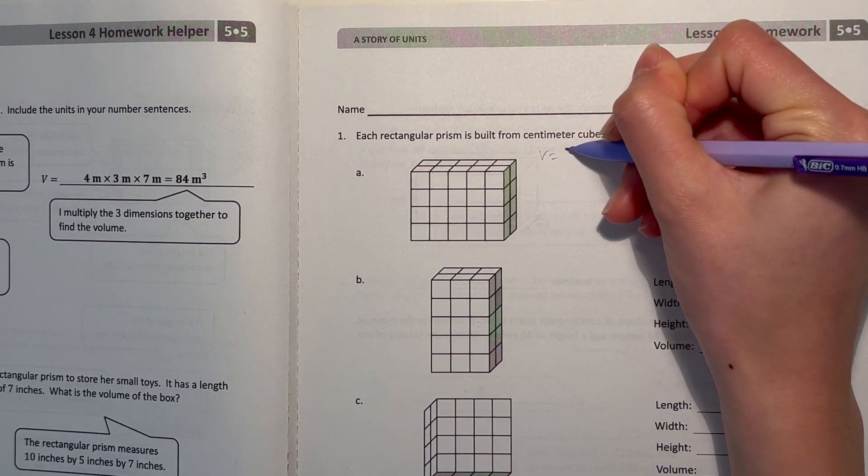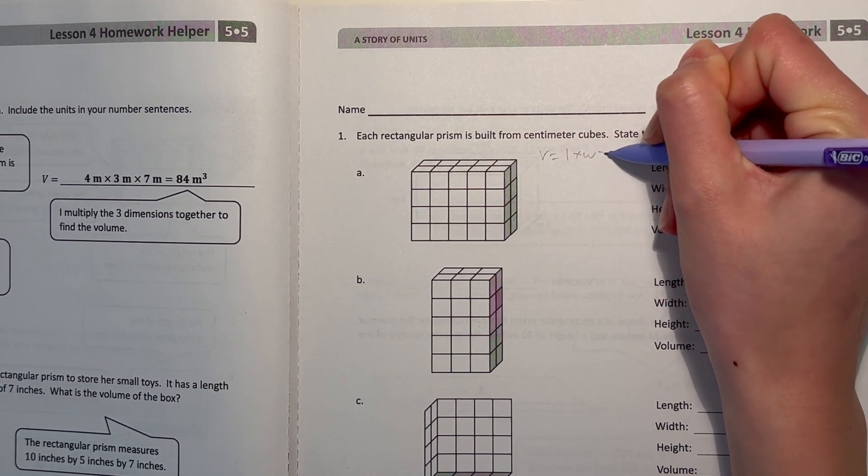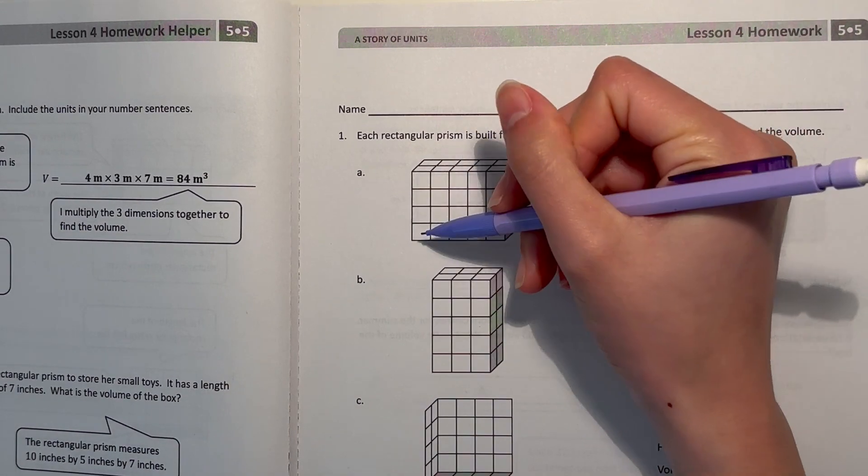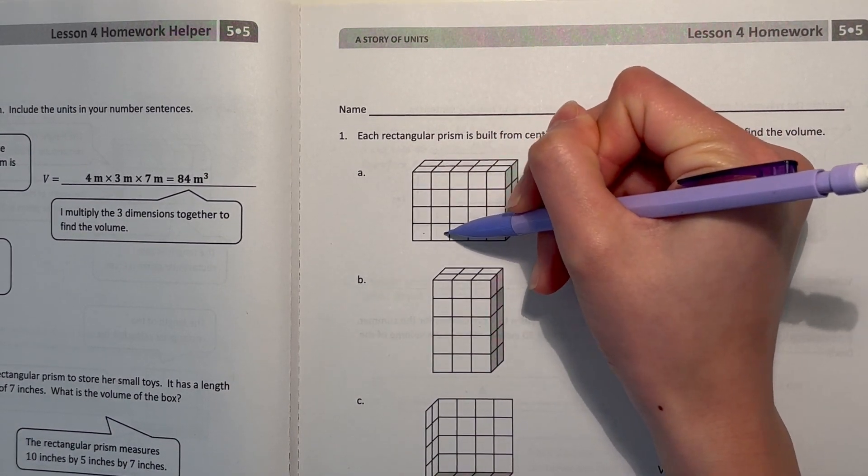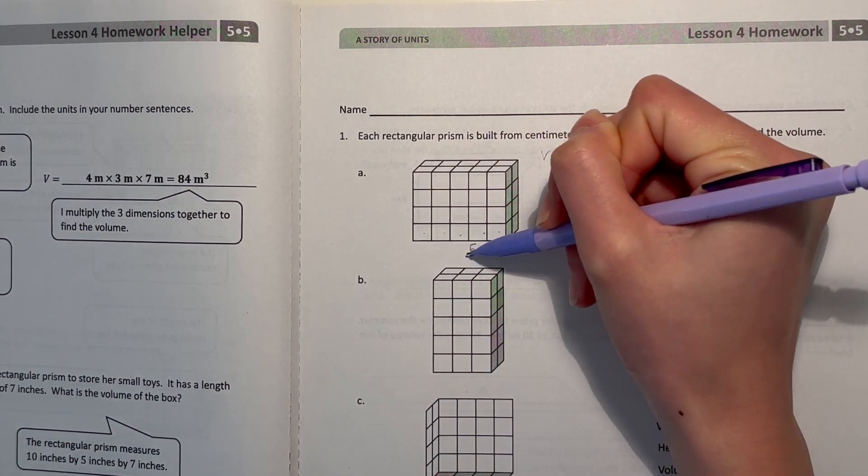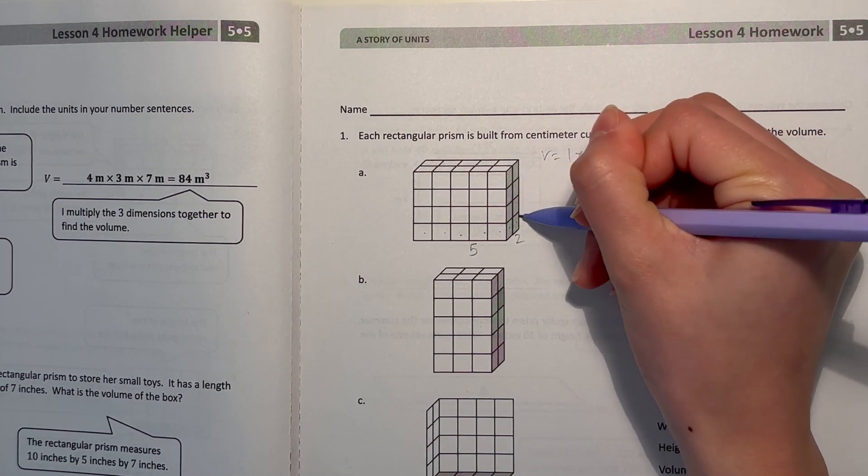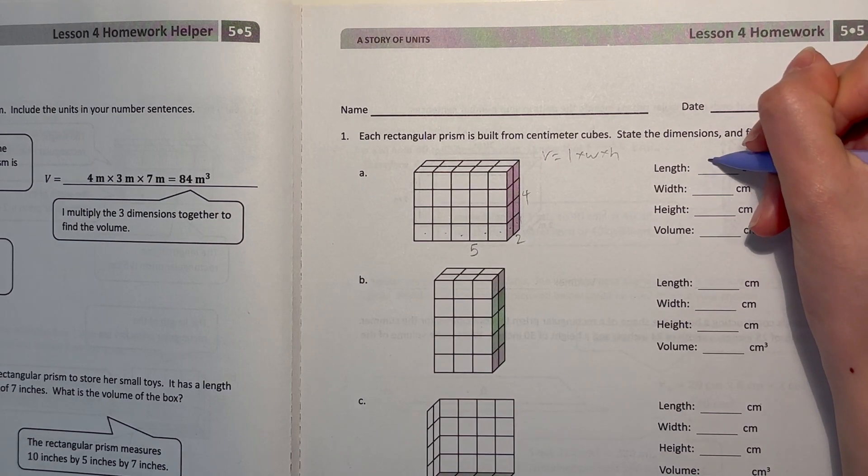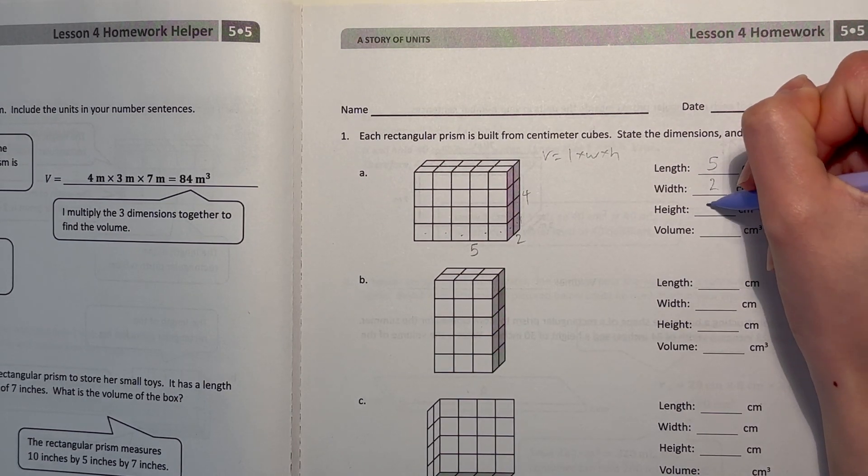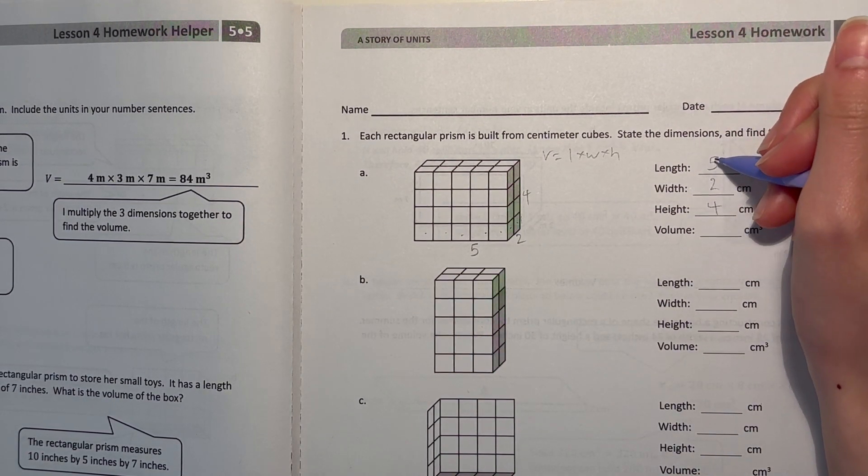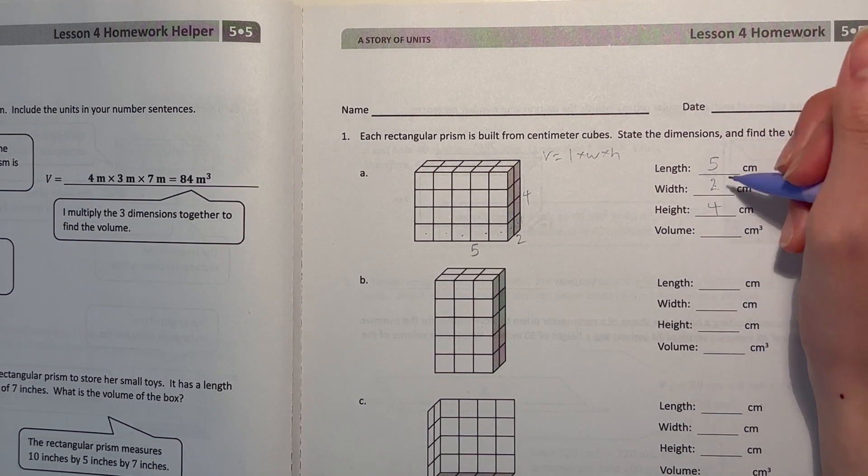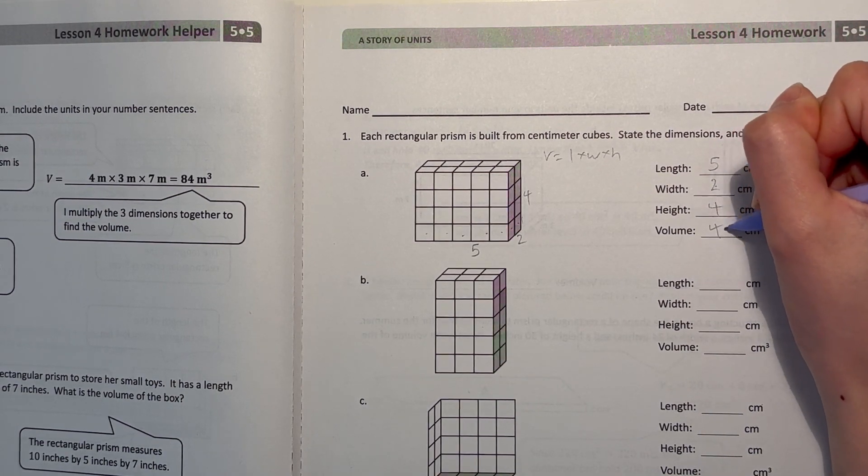Volume is length times width times height. Our length here would be one, two, three, four, five centimeters. Our width is two and our height is four. So five times two times four, that's ten times four which is 40.